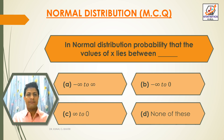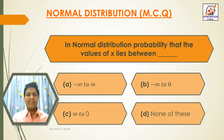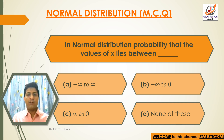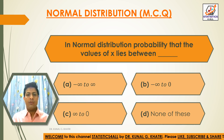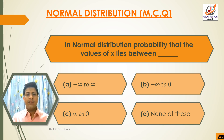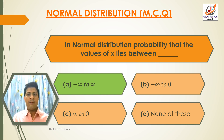Next question: in a normal distribution, the probability that the values of x lie between — Option A: minus infinity to infinity. Option B: minus infinity to 0. Option C: infinity to 0. Option D: none of these. The answer is Option A — minus infinity to infinity.